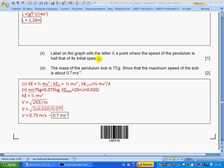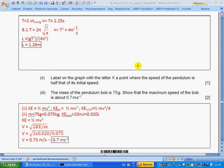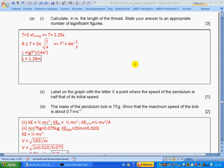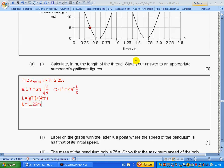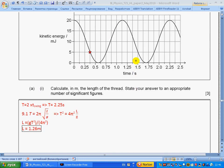Part ii: Label on the graph with the letter A the point where the speed of the pendulum is half that of its initial speed. If speed is half, then kinetic energy is a quarter. So a quarter of 20 is 5, so I marked this point.